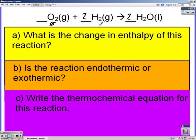Oxygen has a delta H of formation of zero, hydrogen zero, and H2O liquid is negative 258.8.